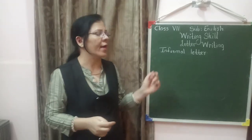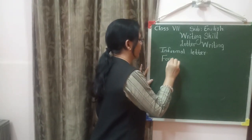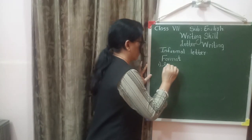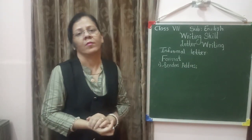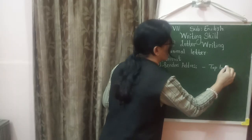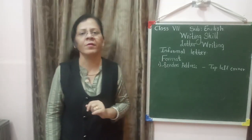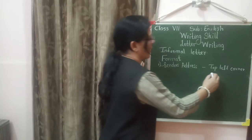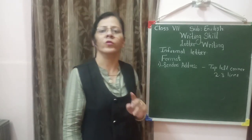Let us see how to write an informal letter and talk about the format. The first element is the sender's address, which is written at the top left corner. The address should not be more than 2 to 3 lines.